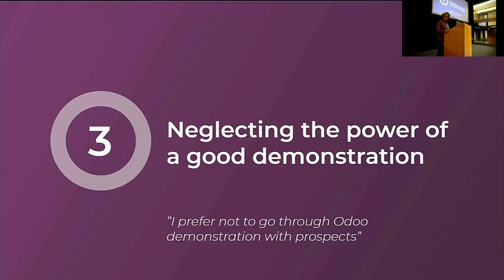The third mistake is neglecting the power of a good demonstration. The key to closing a deal is giving a really good demo. Many unsuccessful partners just present Odoo using slides, which from experience doesn't work as well. It's a good idea to work with your AM, give a demo to them, get tips and tricks on how to improve, and use the tips available in the partnership knowledge base. You want to set a really high expectation for your customer to help get shortlisted or close the deal.